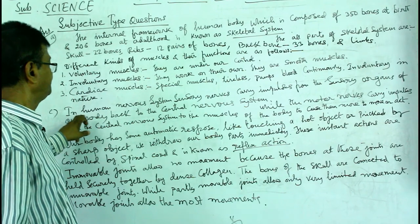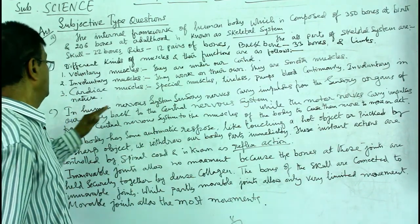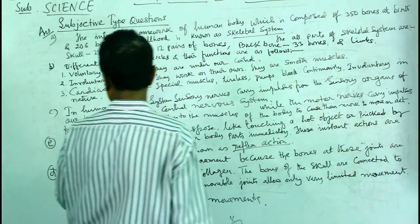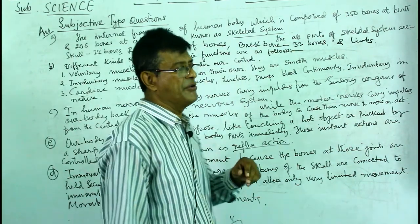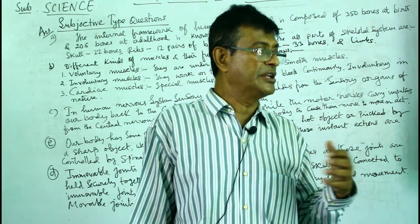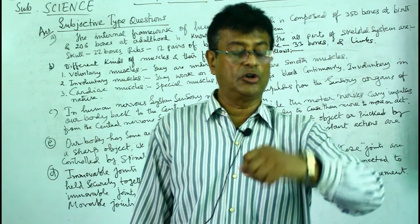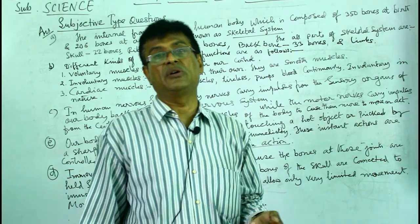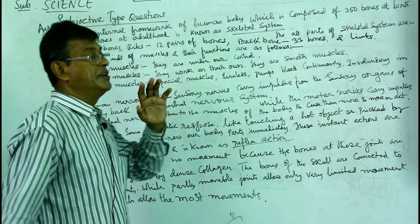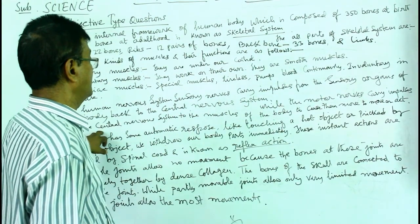Question C - Difference between sensory nerve and motor nerve: sensory nerves carry impulses from the sensory organs of the body back to the central nervous system. They receive messages from the surroundings and send them back to the central nervous system of the body to cause the body to move or act accordingly.